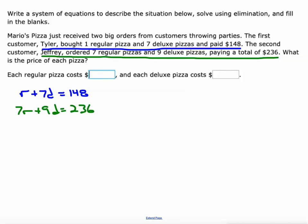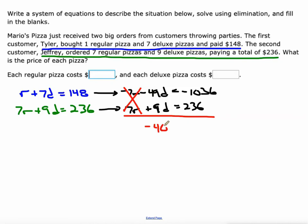I think the easiest way to solve this one is to multiply the top equation by -7, so -7r - 49d = -1036. The second equation I'll just leave it alone: 7r + 9d = 236. Now I can add these two equations together and the r values will cancel out. -49d + 9d is -40d, and -1036 + 236 is -800. When I divide both sides by -40, I'll get the price of a deluxe pizza, which is $20.